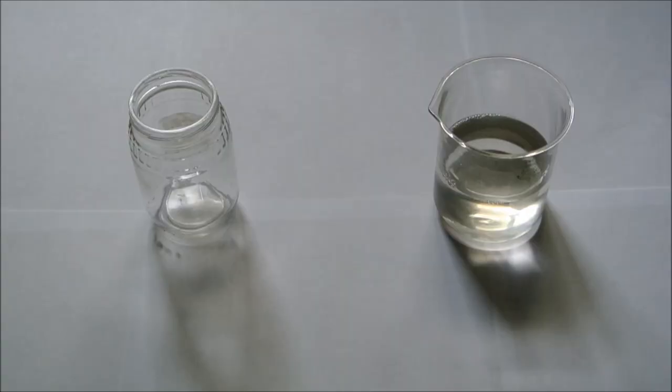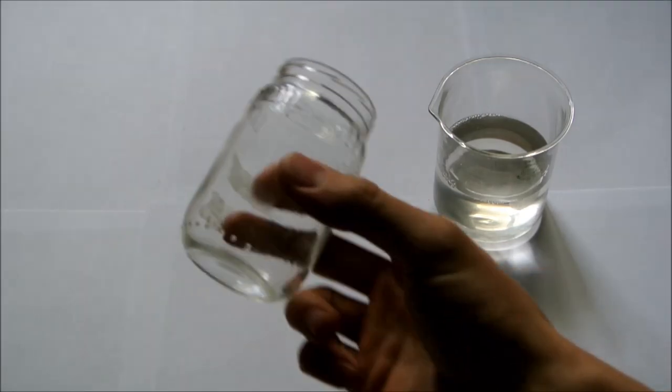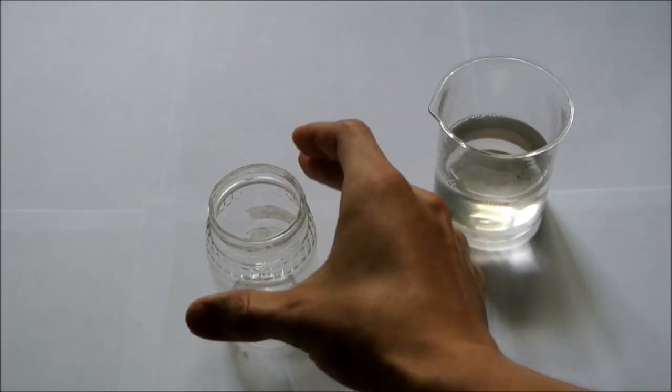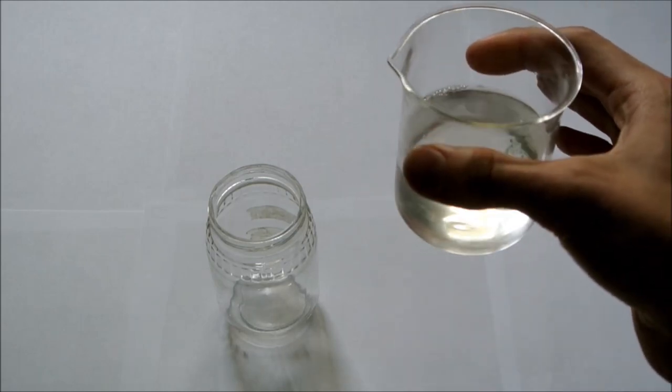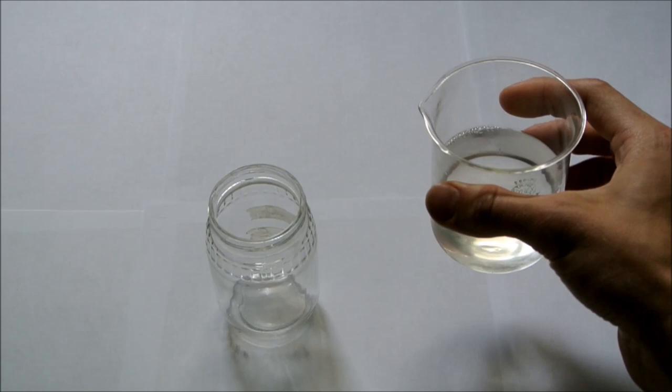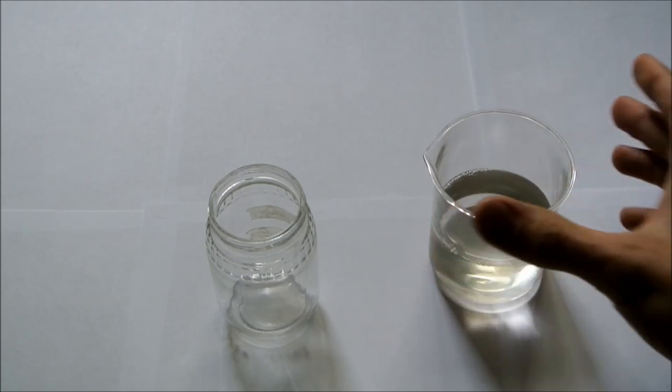Now for the actual cell setup, I'll be using this clean baby food jar as the container for my electrolyte. And I'll be using this solution of about 90 grams per milliliter of tin chloride dihydrate.